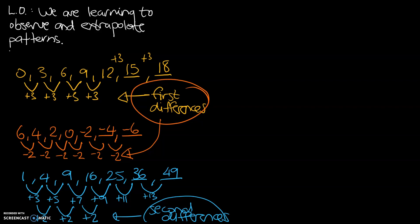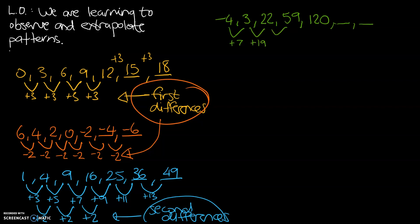Let's look at our next sequence. We've got negative 4, 3, 22, 59, and 120. Let's look at the first differences. From negative 4 to 3 we add 7. From 3 to 22 we add 19. From 22 to 59 we're adding 37. And from 59 to 120 we are adding 61. The first differences are not the same — no really obvious pattern. So let's explore the second differences.